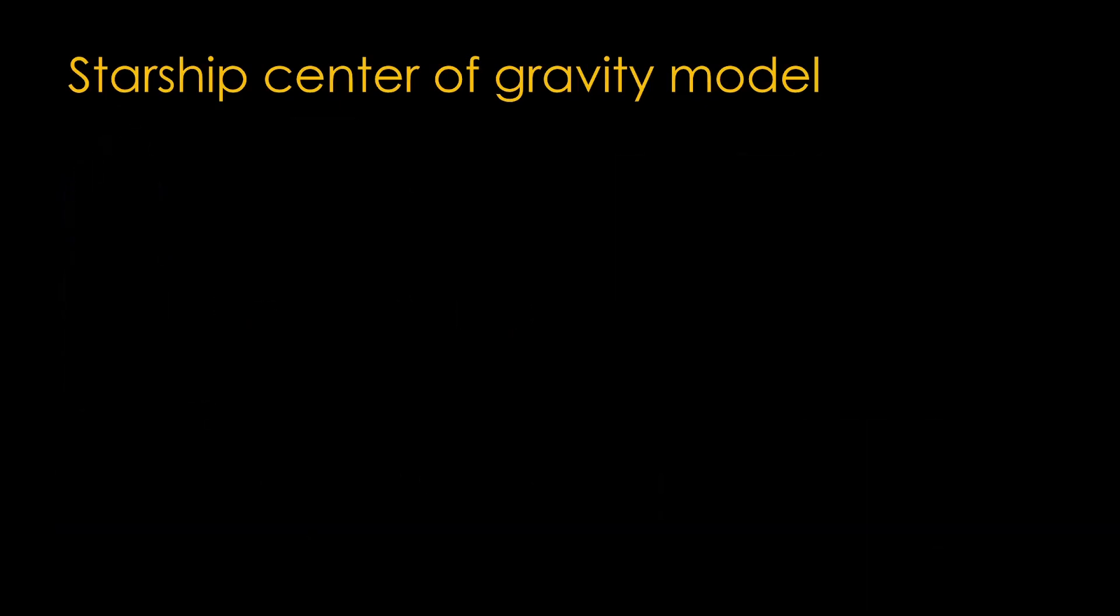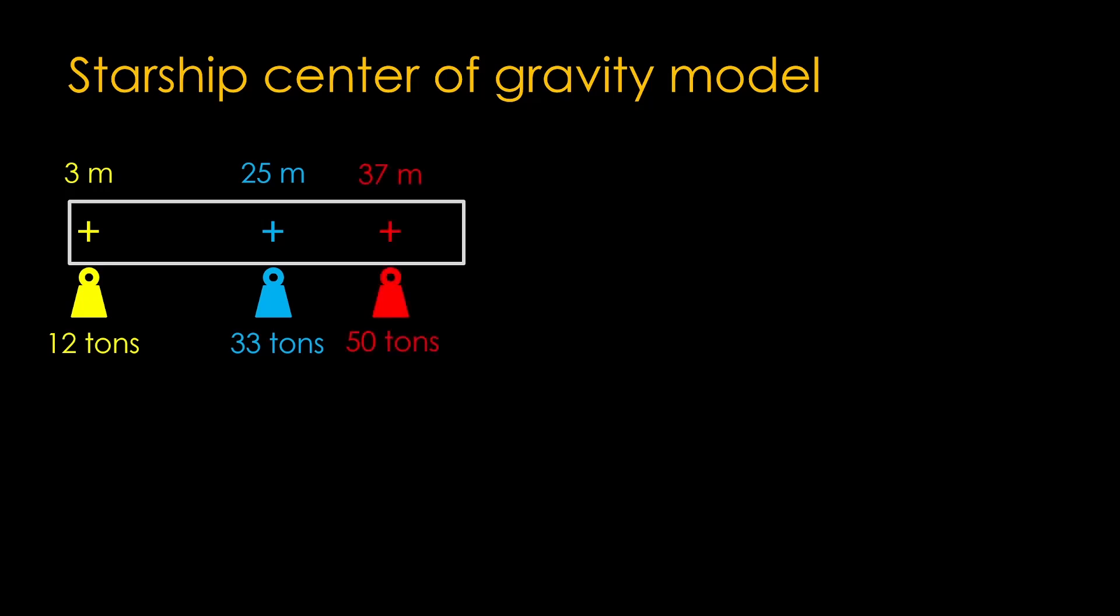How do we figure out the center of gravity? There are multiple methods, and I've chosen one that I hope is understandable. We lay the rocket down on its side and treat it like a balance. Each of the masses we calculated are like weights hanging from the rocket at a specific point. There are 12 tons of engine hanging 3 meters from the left end, 33 tons of structure hanging at the middle at 25 meters, and 50 tons of payload hanging at 37 meters. Let's say we add a support point, a fulcrum, 12 meters from the left. Will this balance?